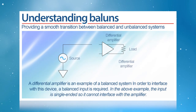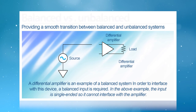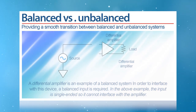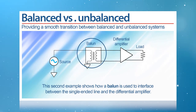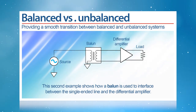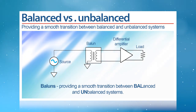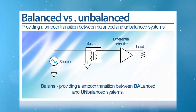Now, let's say we have an unbalanced transmission line. How would we incorporate a balanced component, such as a differential amplifier? The answer is a balun. In typical engineering fashion, baluns get their name straight from their intended purpose: to provide a smooth transition between balanced and unbalanced systems.